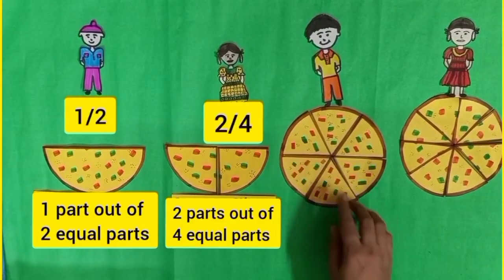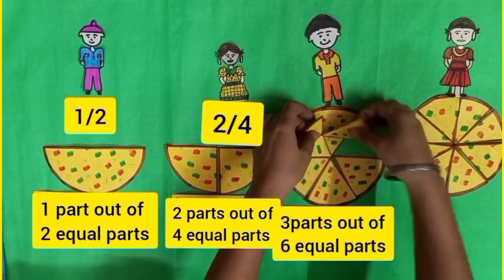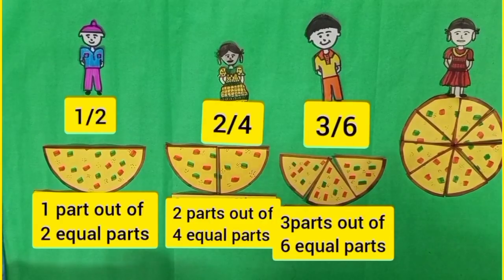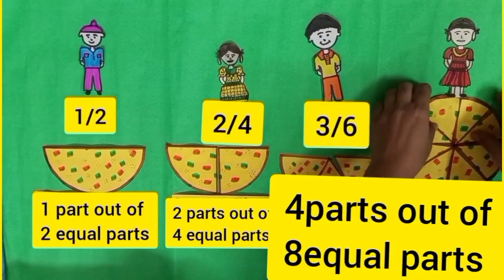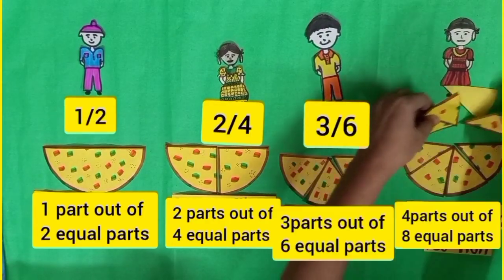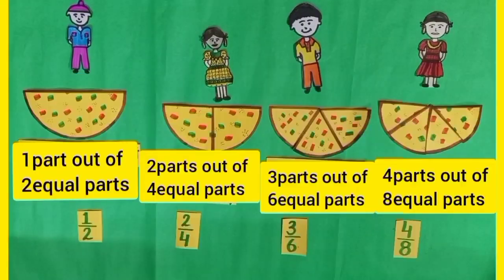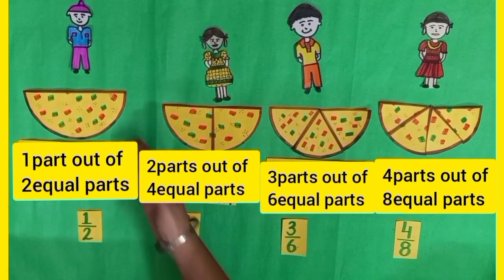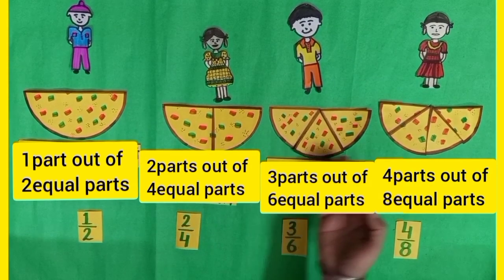And Deepak ate three parts out of six equal parts of pizza — he ate three upon six parts of pizza. And another person ate four parts out of eight equal parts of pizza — four upon eight parts of pizza. In this way, dear students, we saw that each of them divided the pizza into different slices and also ate different parts of the pizza.